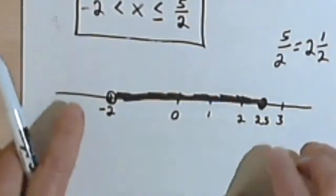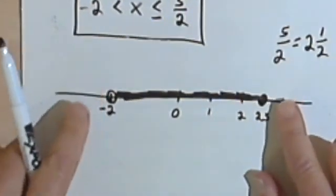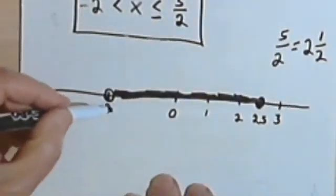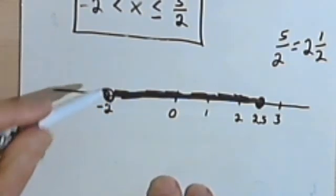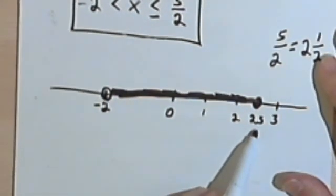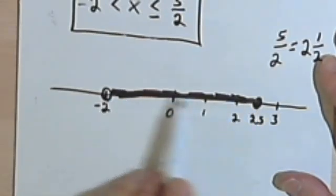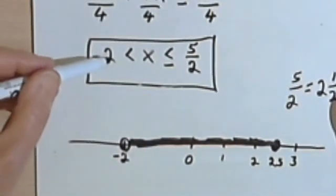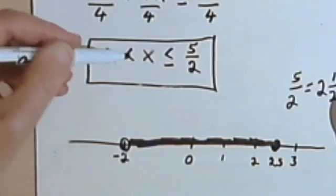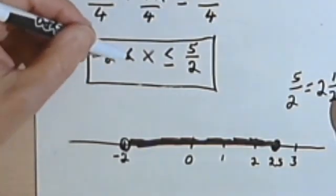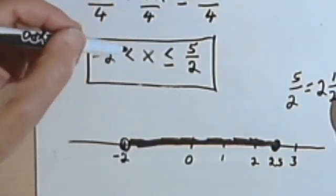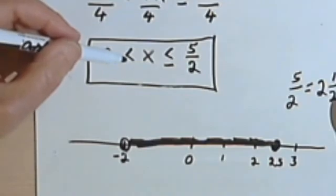So this line from negative 2, but not including the negative 2 (that's why I have an open circle), all the way up to and including 2.5, is going to be the number line picture of this compound inequality. Did I say this is a compound inequality? If you have more than one inequality sign, it's called a compound inequality.